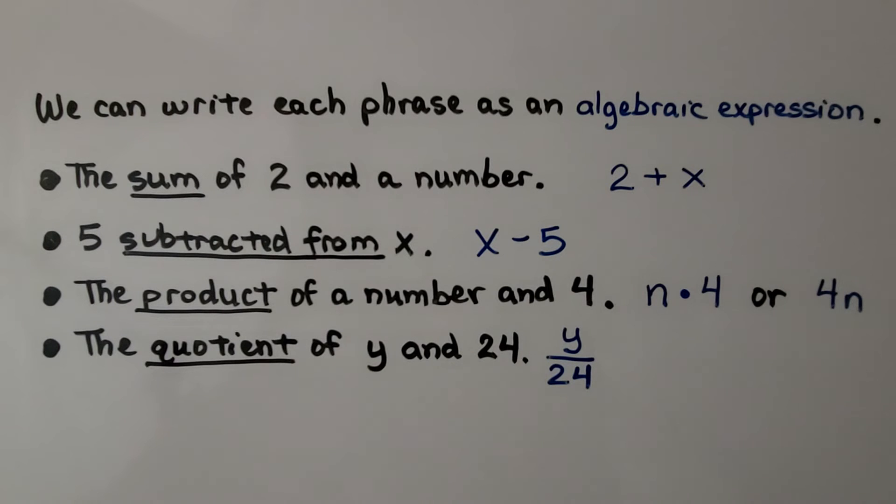The product of a number and 4 would be n times 4, or 4n, right next to each other to show multiplication.